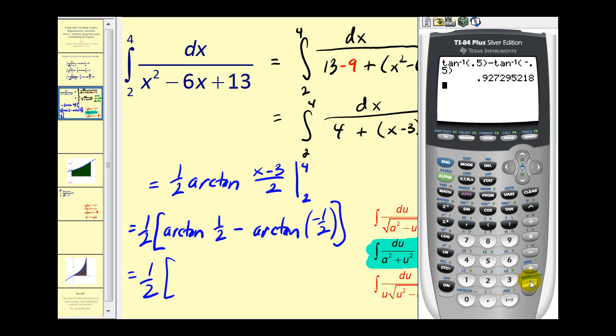So this comes out to approximately 0.9273. Multiply that by 1 half, or 0.5, which is approximately 0.4636.